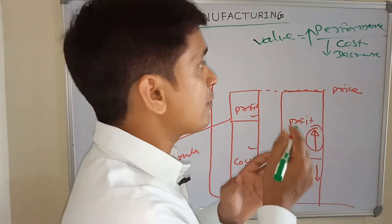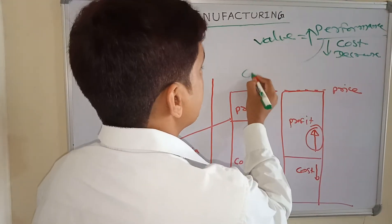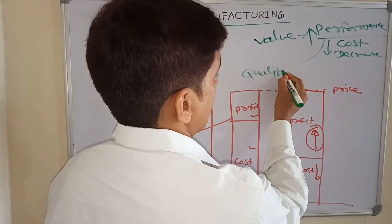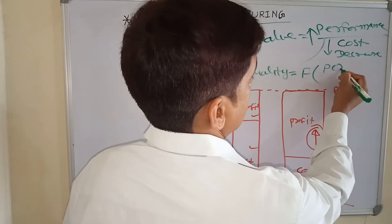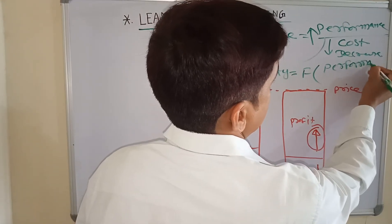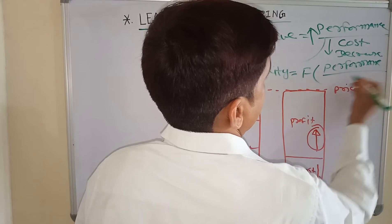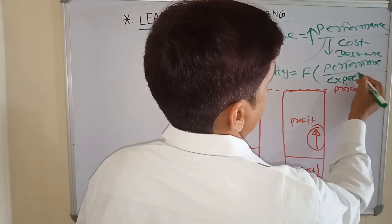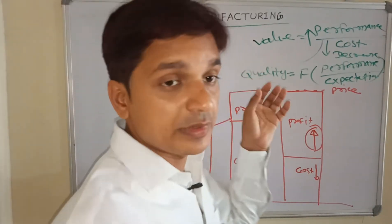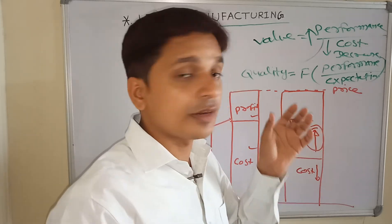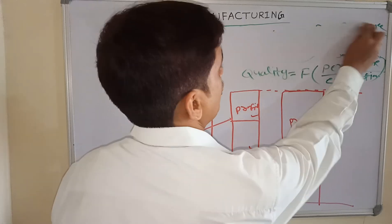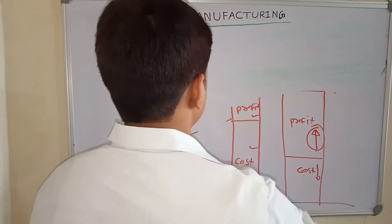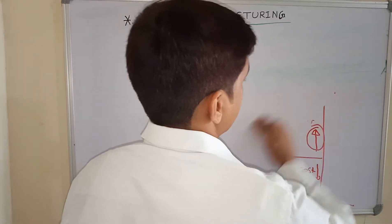In my previous session I already defined that quality is a function of performance and expectation. So if your value increases, that means the quality of your organization will increase and your organization will be optimized. Now we move to the next topic — the 3M, which is very important in lean manufacturing.